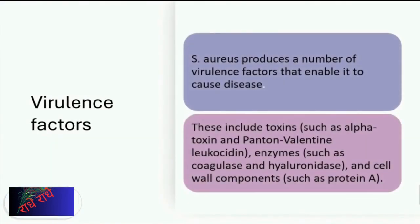Staphylococcus aureus has been widely studied due to its capacity to cause disease in humans. An important trait of S. aureus is the ability to produce virulence factors. These virulence factors include toxins, enzymes, and components of the cell wall, all of which contribute to staphylococcal disease.